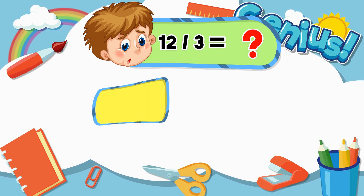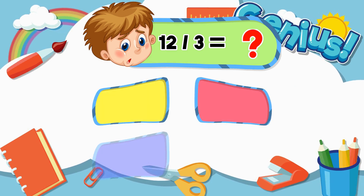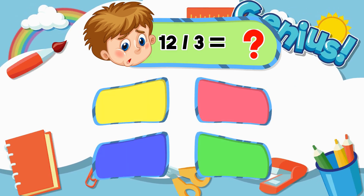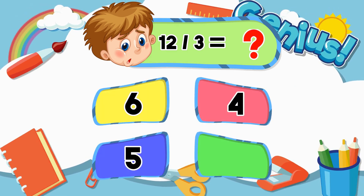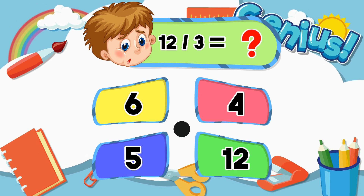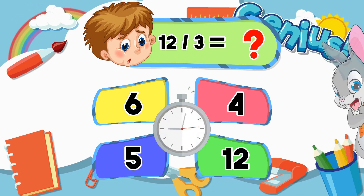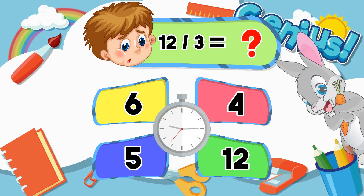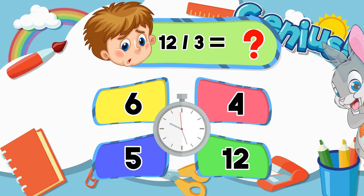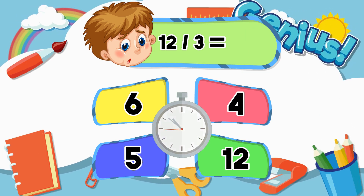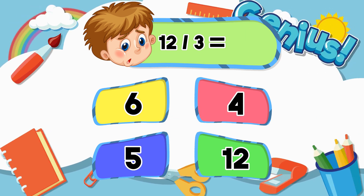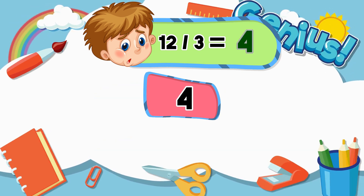What is twelve divided by three? Six, four, five, twelve. Four.